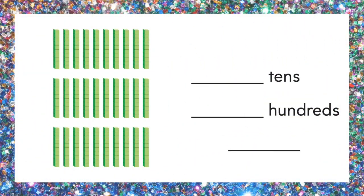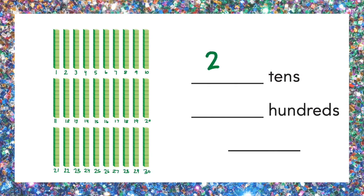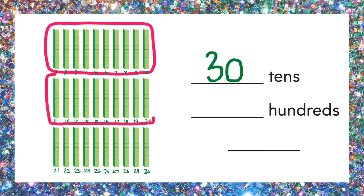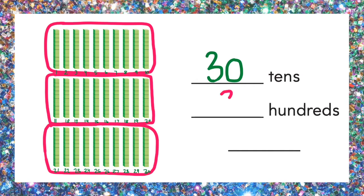Here's another one. Count the tens: 1 through 30. There are 30 tens. Now circle the groups of 10 to find the hundreds: one, two, three. There are 3 hundreds. Write the number: 300.